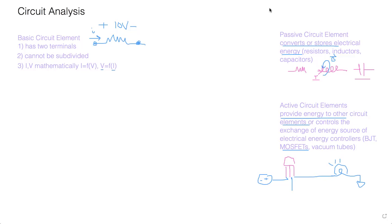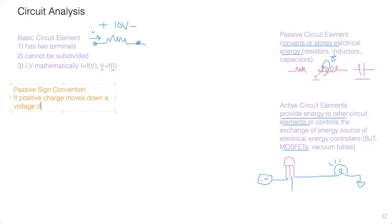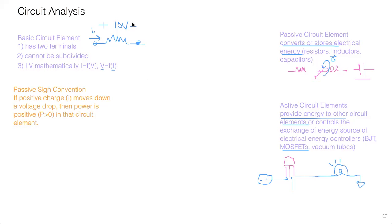A big concept you need to understand is passive sign convention. If positive charge — that means current — moves down a voltage drop, then power is positive, i.e., P greater than zero in that circuit element. I'm going to draw this out with a voltage source and a resistor.